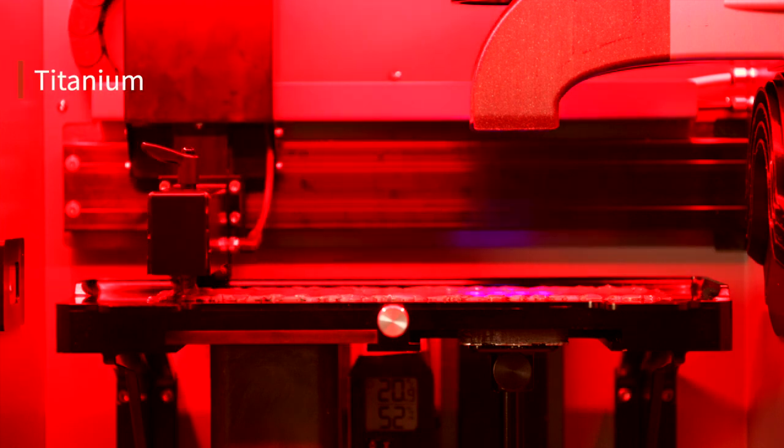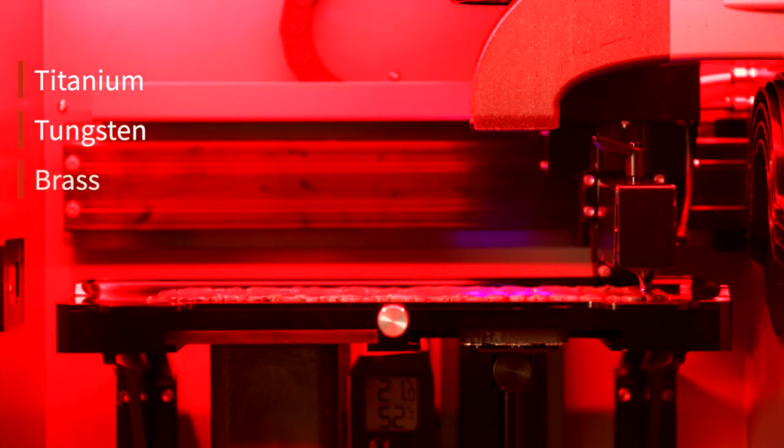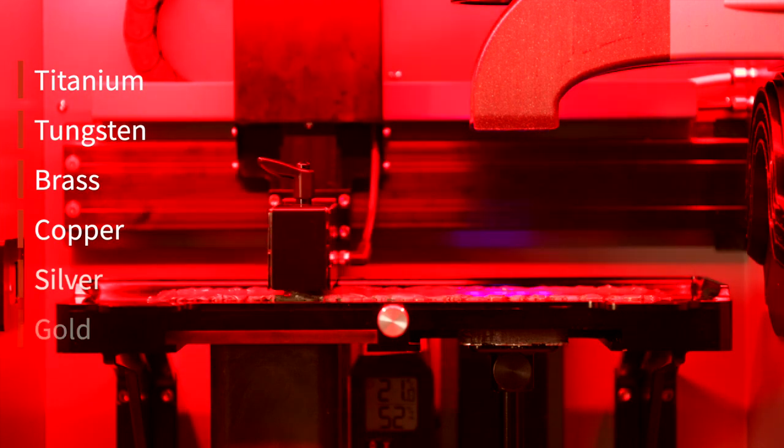The feedstock is photopolymer resin filled with metal powder such as stainless steel 316L. However, it's also possible to print titanium, tungsten, brass, copper, precious metals and more.